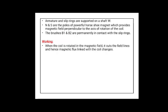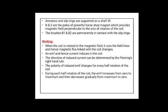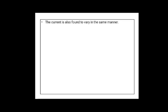Let us see the working of this AC generator. When the coil is rotated in the magnetic field, it cuts the field lines and hence the magnetic flux linked with the coil changes. As we know, when there is a change in magnetic flux, EMF induces, and hence current induces in the coil. The direction of induced current can be determined using Fleming's right hand rule. The polarity of induced EMF changes for every half rotation of the coil. During each half rotation, the EMF increases from zero to maximum and then decreases gradually from maximum to zero.